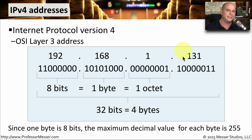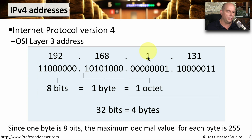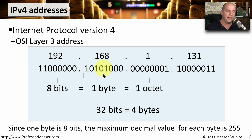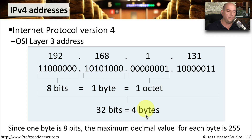In reality, your computer sees this in binary, so it's actually interpreting this with eight bits that make up the 192, eight bits that make up the 168, eight bits for the number 1, and eight bits for 131. We sometimes refer to each one of those sections as a byte, because eight bits equals a byte. You might also hear it referred to as an octet, which means it's eight individual bits making up that byte. This means that the IPv4 address is 32 bits in length, or four bytes total.